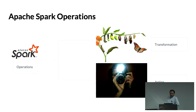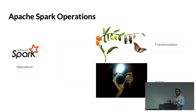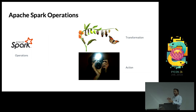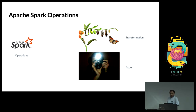Spark has operations — some are transformations and some are actions. All transformations are lazily evaluated. When you apply an action, such as writing back to Parquet or Delta.io, Spark plots the entire graph and starts executing it at that point.